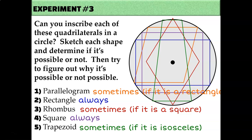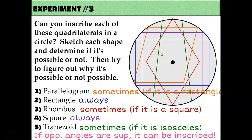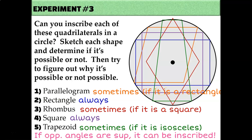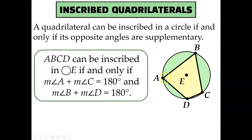The answer is: if opposite angles are supplementary. For rectangles and squares, all angles are 90, so opposite angles add up to 180 degrees — they're supplementary. That's also true for isosceles trapezoids: this angle plus this angle equals 180, and this angle plus this angle equals 180. So the rule for inscribed quadrilaterals is: if a quadrilateral has been inscribed in a circle, then each pair of opposite angles must sum to 180 degrees. It's not just special quadrilaterals — a random quadrilateral like ABCD inscribed in circle E works too, as long as its opposite angles happen to add up to 180.